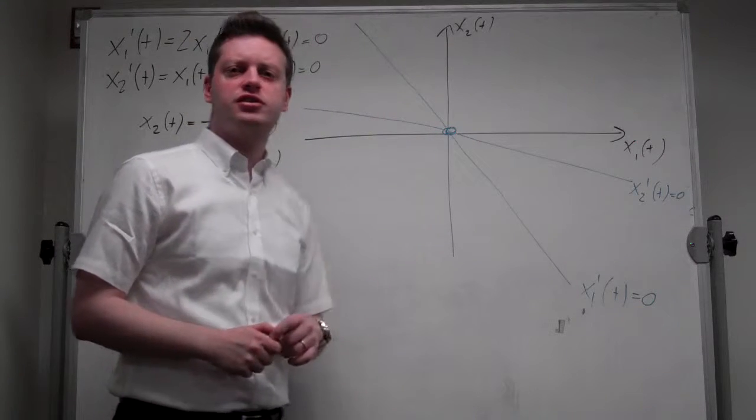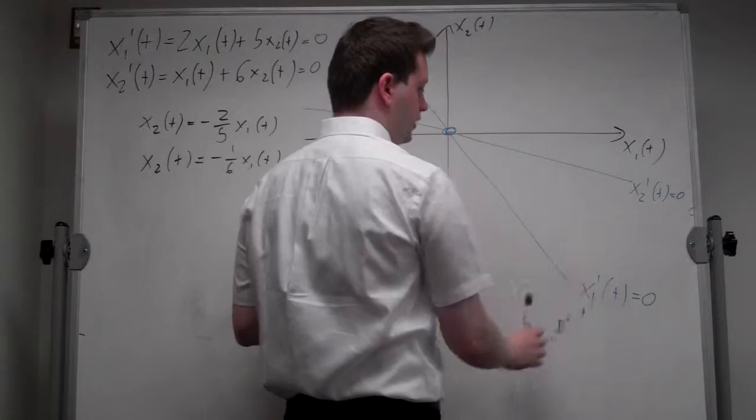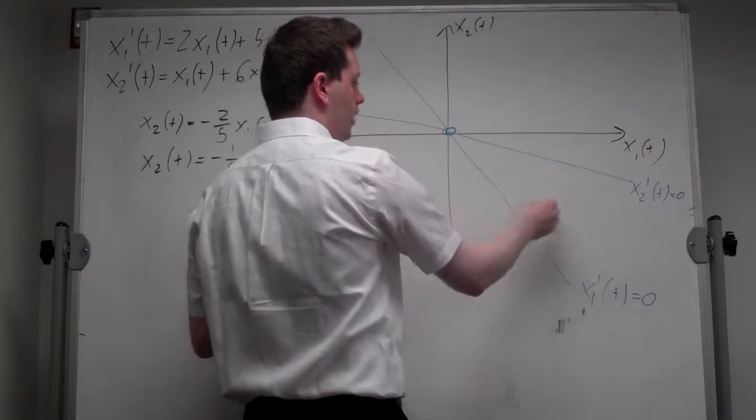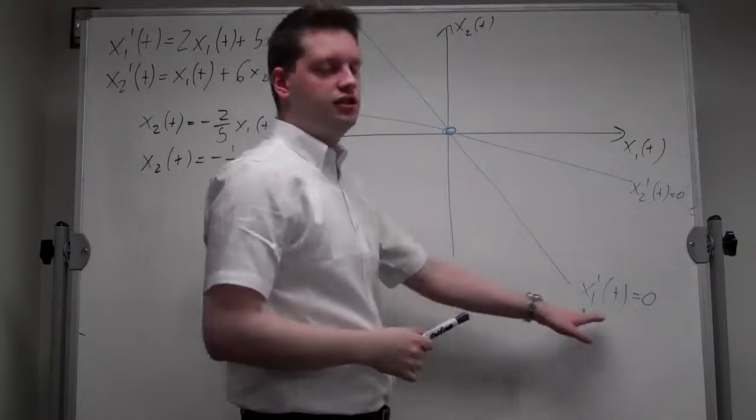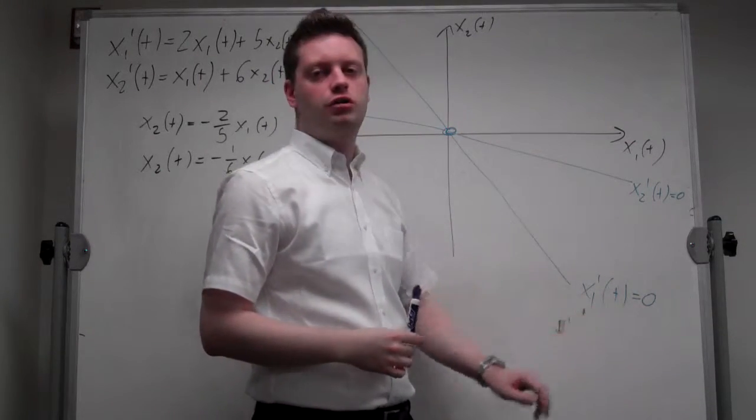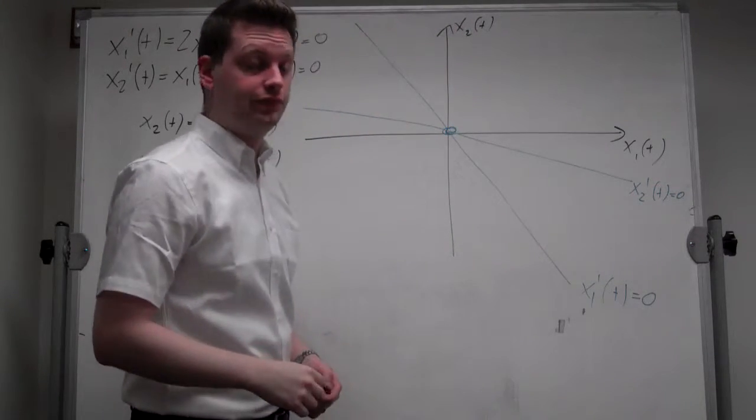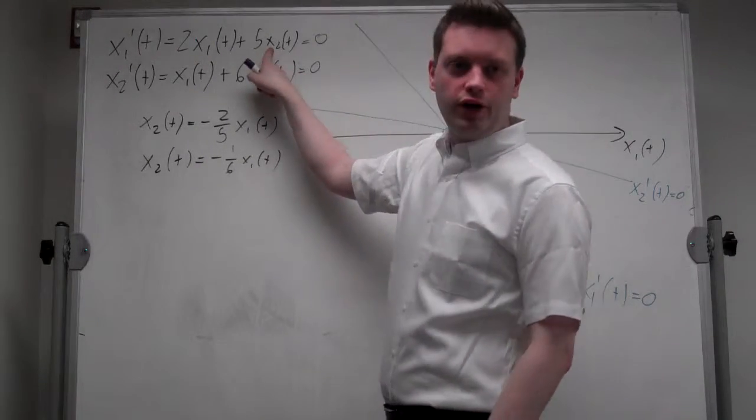So I can start thinking about, okay, what are the dynamics of this system? Let's start with x1 t. I want to know if I'm to the right or the left, or that is above or below this line. Where is x1 moving? Is x1 moving to the right or to the left?